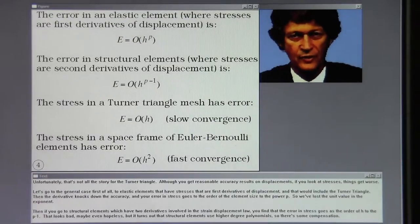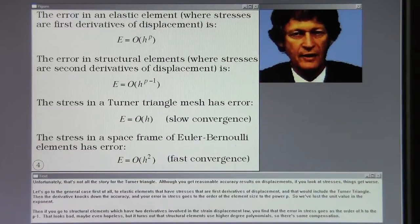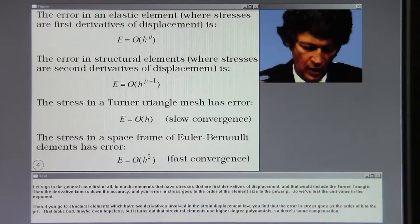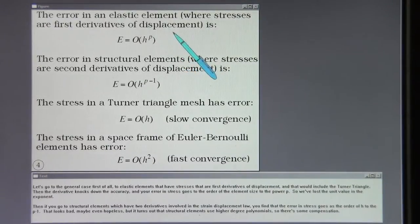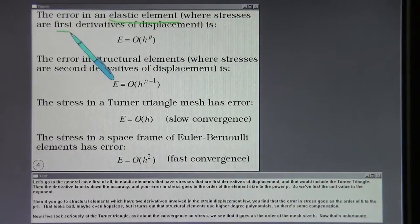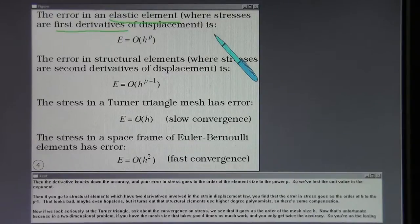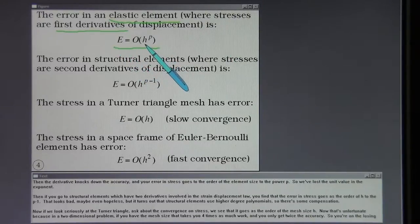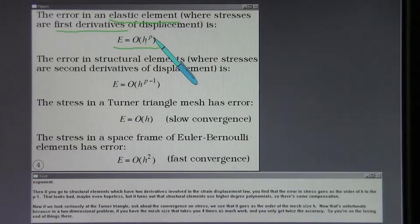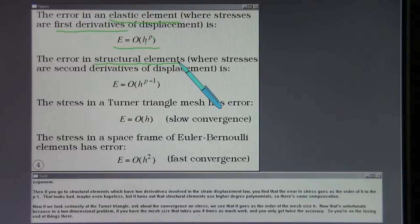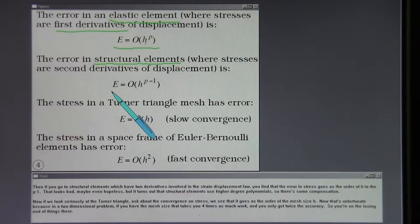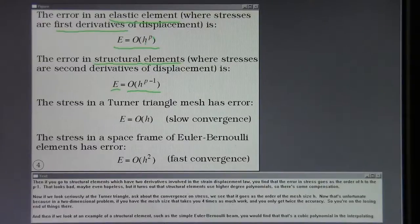Unfortunately, that's not all the story for the Turner triangle. Although you get reasonable accuracy results on displacements, if you look at stresses, things get worse. Let's go to the general case first of all: to elastic elements that have stresses that are first derivatives of displacement, and that would include the Turner triangle. Then the derivative knocks down the accuracy, and your error in stress goes to the order of the element size to the power of P. So we've lost the unit value in the exponent. Then if you go to structural elements which have two derivatives involved in the strain-displacement law, you find that the error in stress goes as the order of H to the P minus 1. That looks bad, maybe even hopeless, but it turns out that structural elements use higher degree polynomials. So there's some compensation.